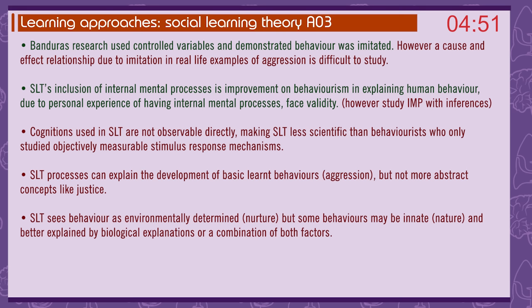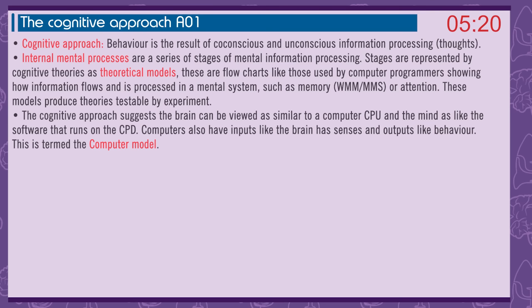However, a cause-and-effect relationship due to imitation in real-life examples of aggression is difficult to study. Social learning theory's inclusion of internal mental processes is an improvement on behaviourism for explaining human behaviour — face validity. However, cognitions are not directly observable, making SLT less scientific than behaviourism. SLT can explain basic learnt behaviours like aggression, but not more abstract concepts like justice. SLT sees behaviour as environmentally determined — nurture — but some behaviours may be innate — nature — and better explained by biological explanations.